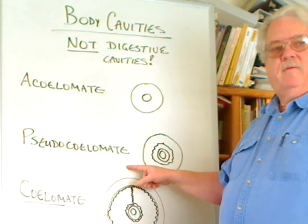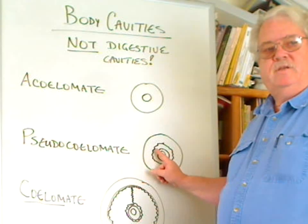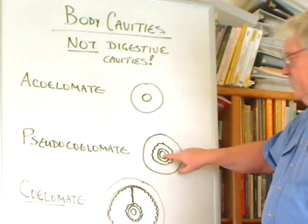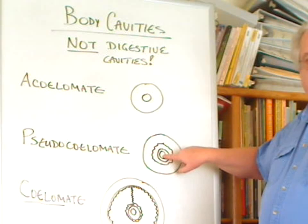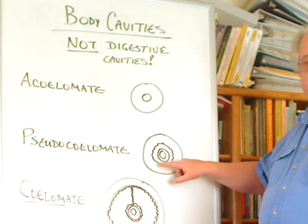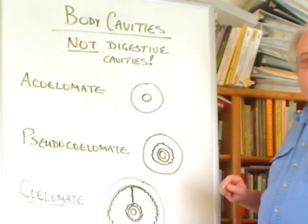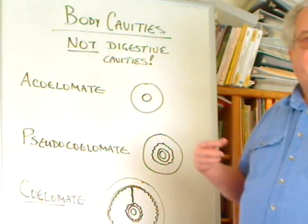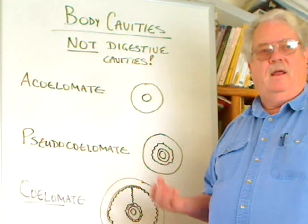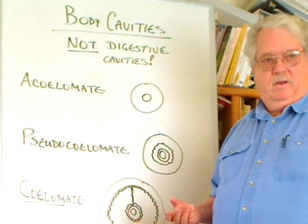The next level of evolution is when an open space actually starts to develop between the inner digestive tract and the outer body wall. This space exists around the gut, but that space is without a lining — so it's like a body cavity, but it's unlined. Therefore, we call it a false body cavity.